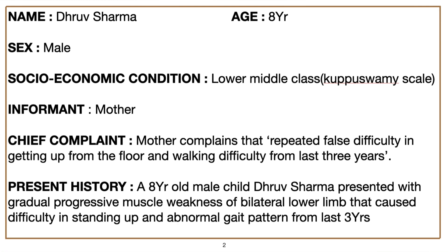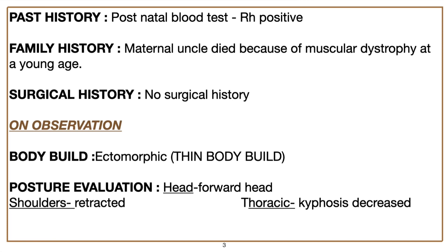In the present history, you have to write in medical terms and provide more detailed information about those symptoms. In past history, write whether there is any history of medical illnesses relevant to the present condition. If it is not relevant, you can simply write 'no relevant past history.'